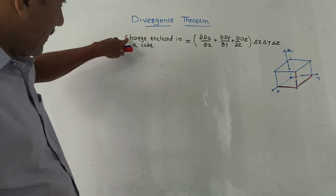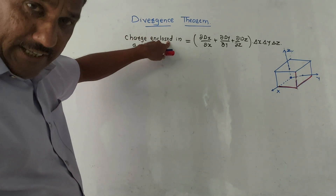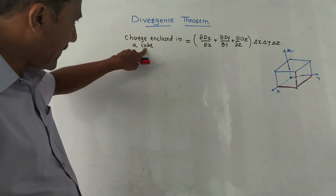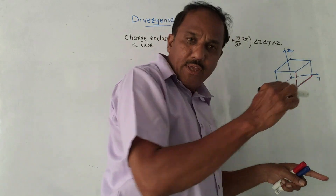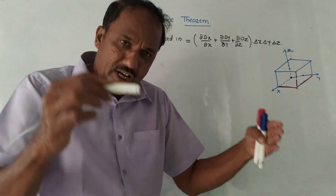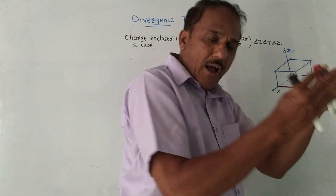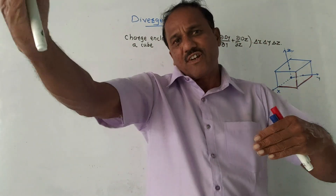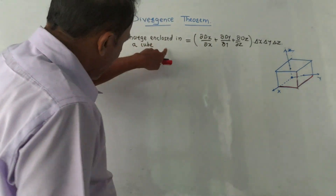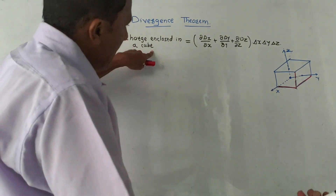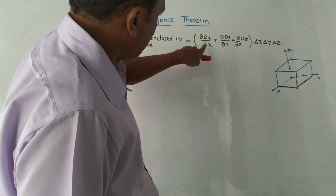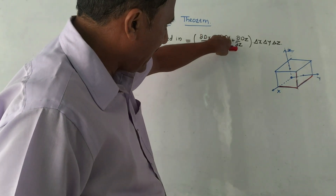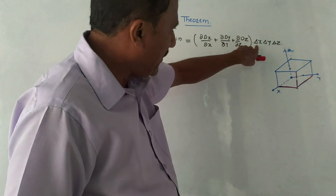Let us start the session. The derivation of the Divergence Theorem starts with this formula: charge enclosed in a cube. We are considering a cube and we have to write the expression for the charge which is enclosed in this cube. The flux coming out from the cube is given by: (∂/∂x)dx + (∂/∂y)dy + (∂/∂z)dz, into Δx Δy Δz.